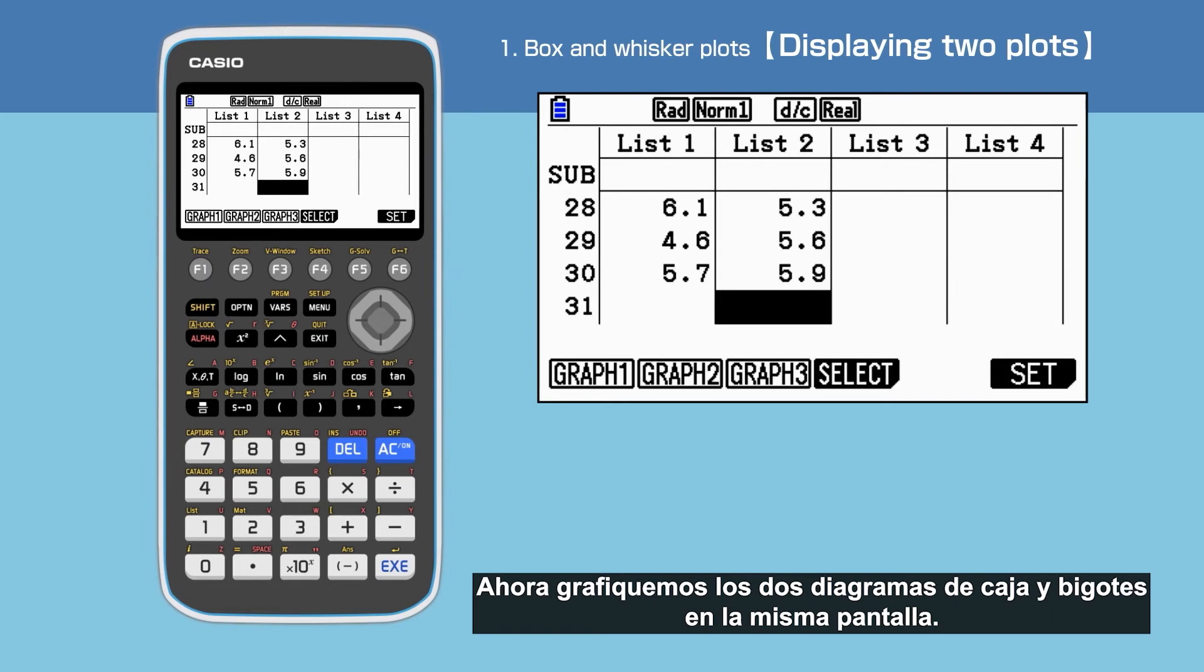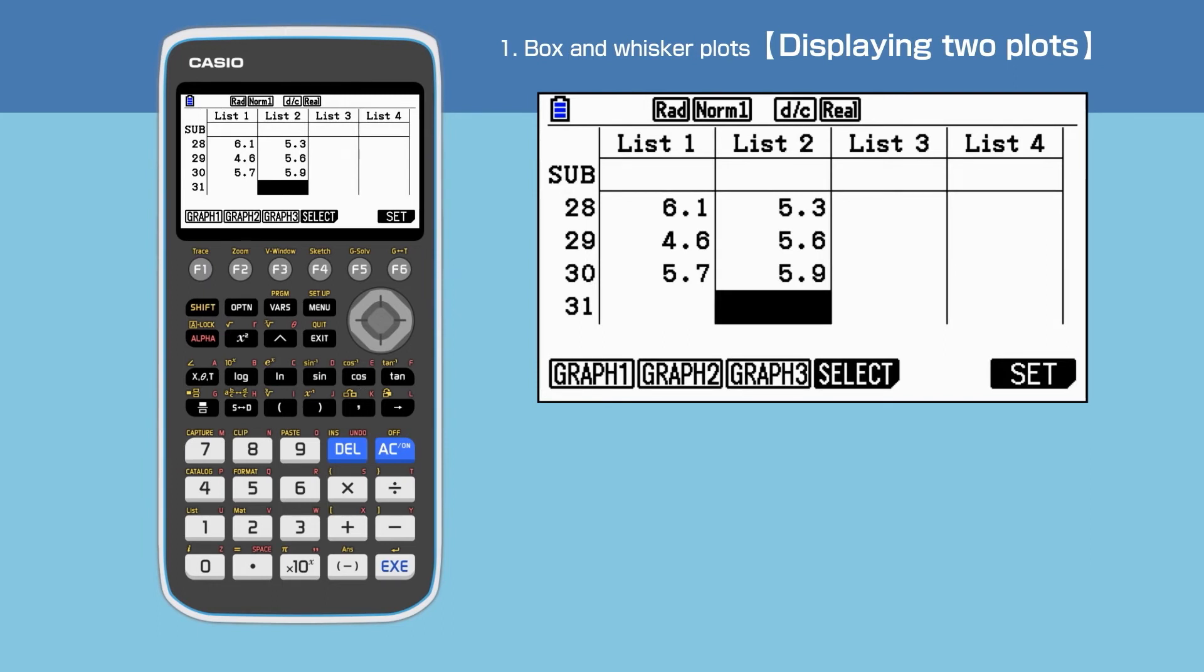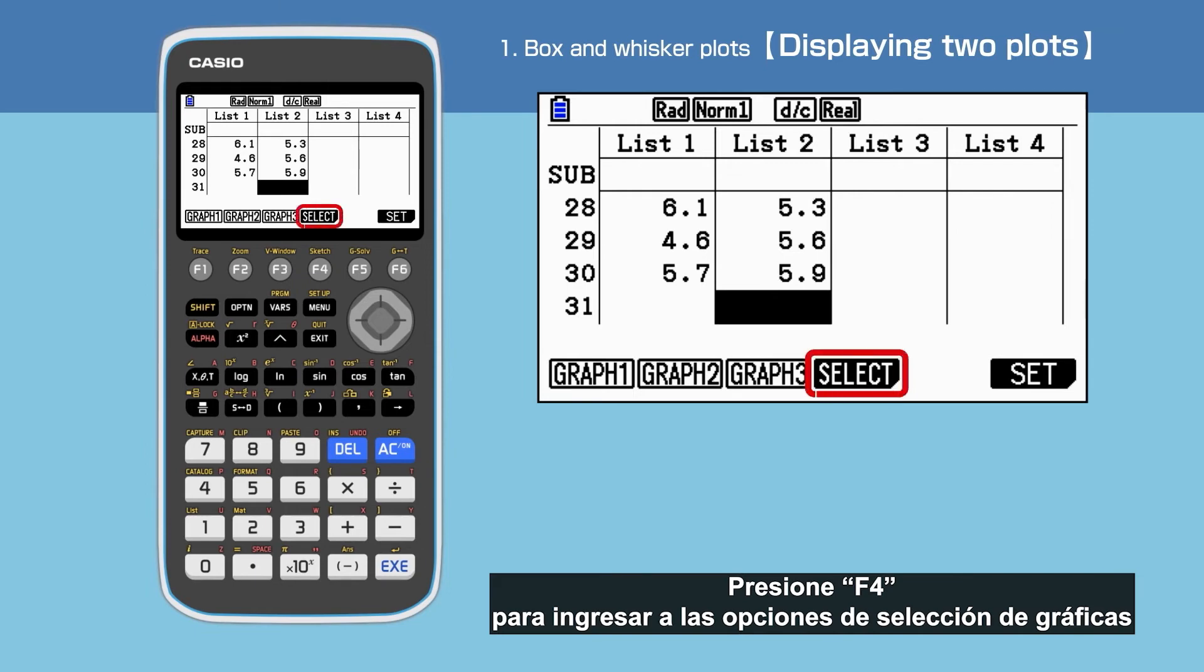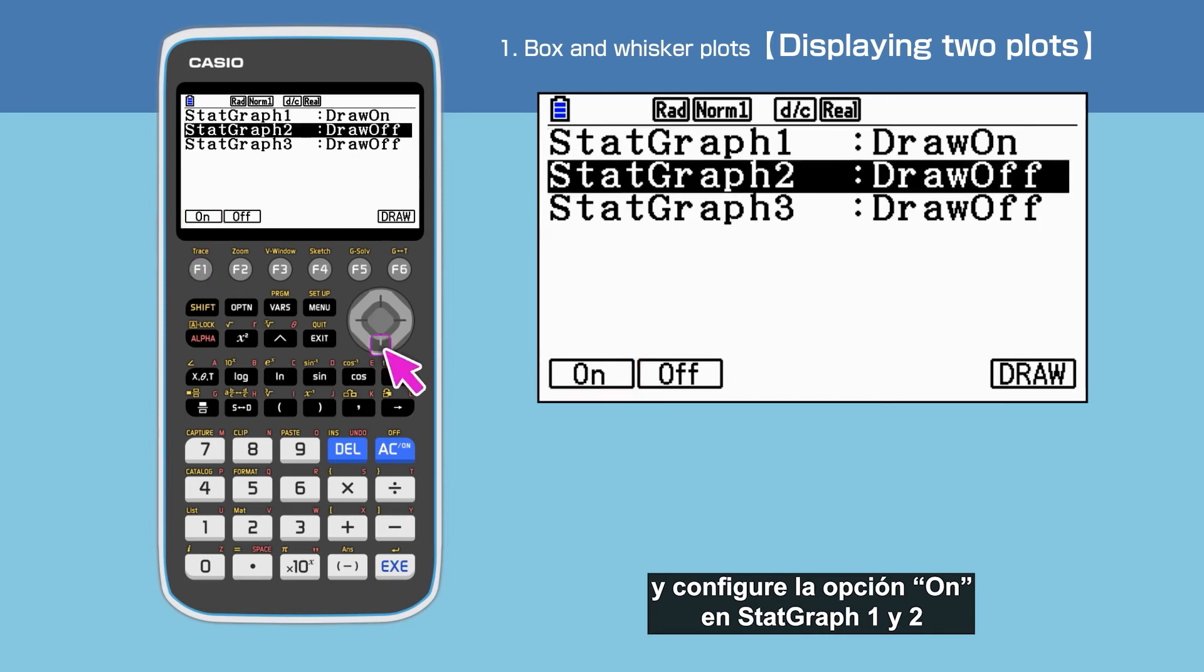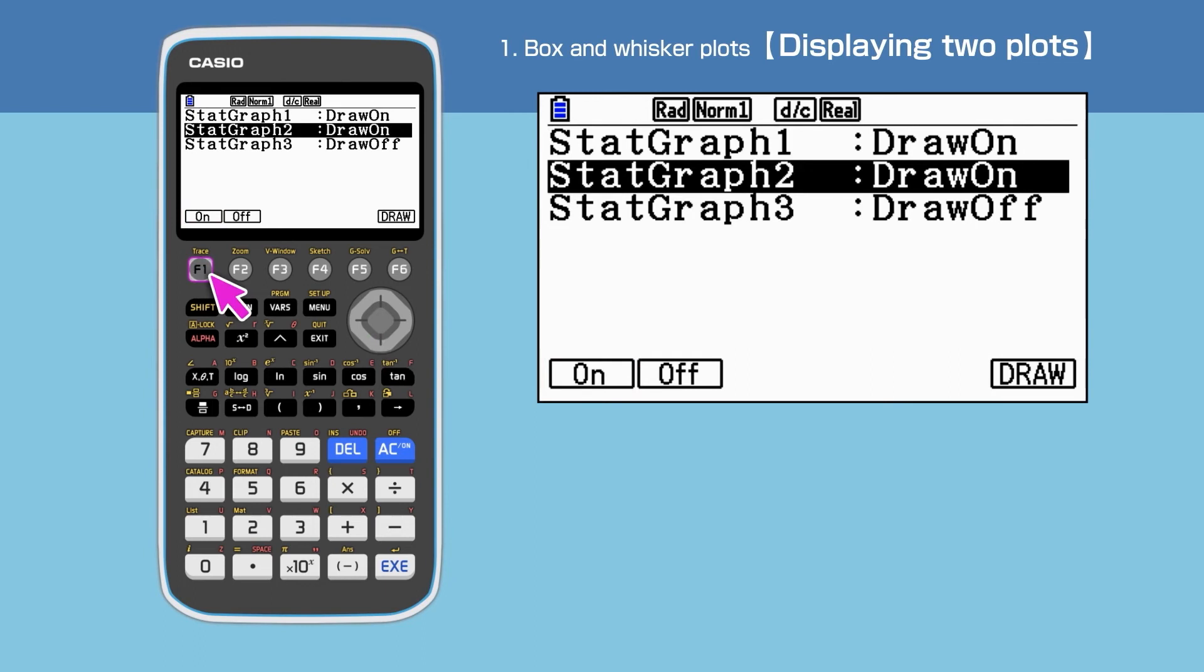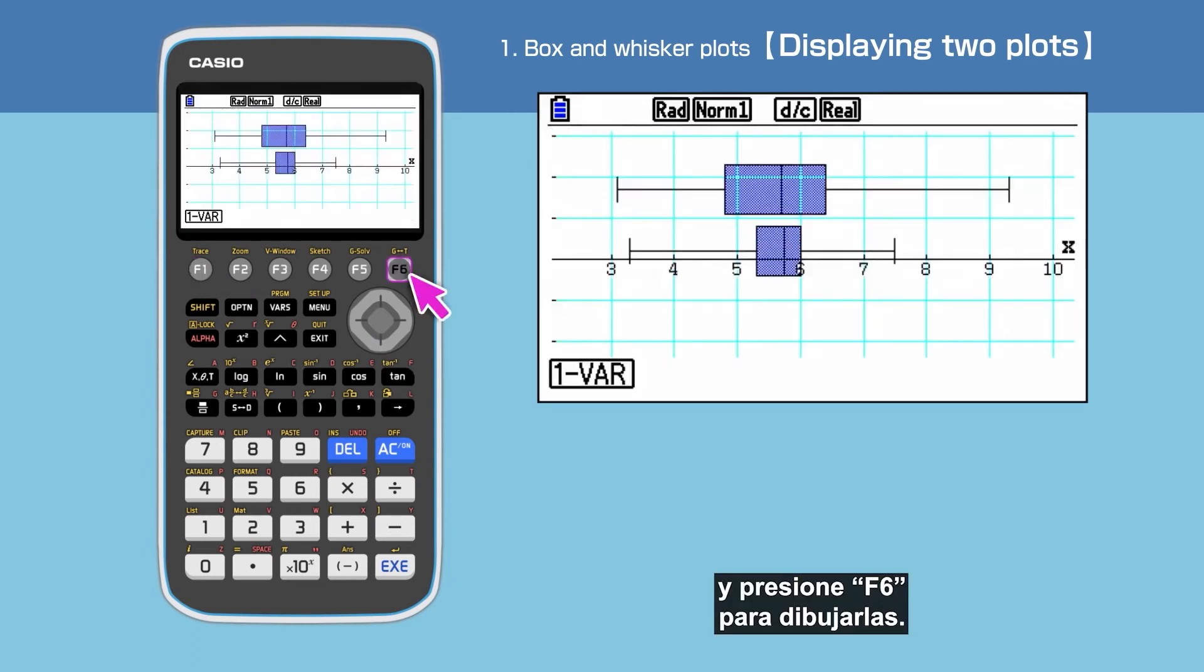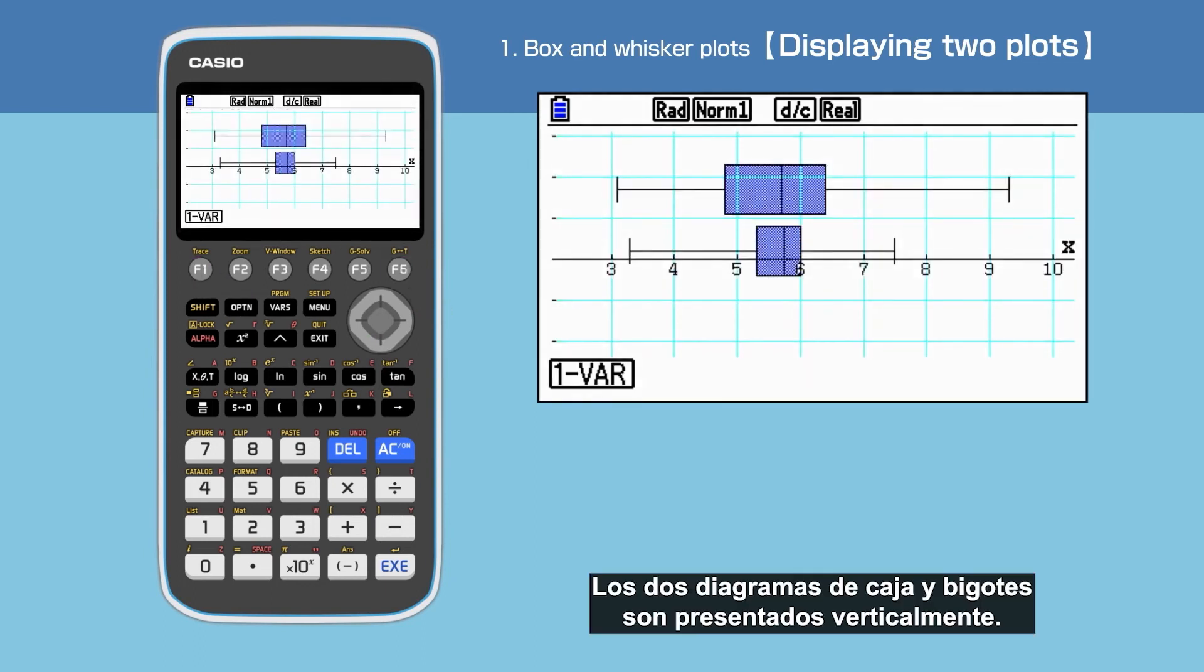Now, let's place the two box and whisker plots on the same screen. Press F4 to open Graph Select screen. And then turn on the Draw On for both Stat Graph 1 and 2. Press F6 to draw. The two box and whisker plots are displayed vertically.